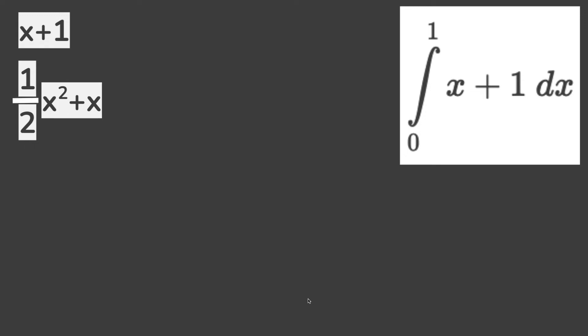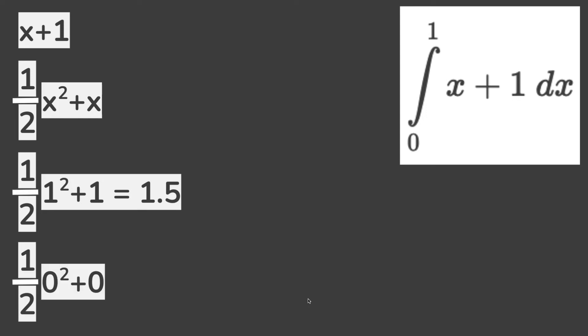So, to solve the integral, we need to substitute the boundary values into the integral. So, let's do that now. We can put the 1 in and we get 1.5, and we can also put the 0 in and we get 0.